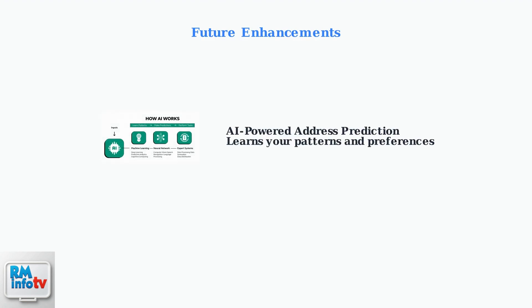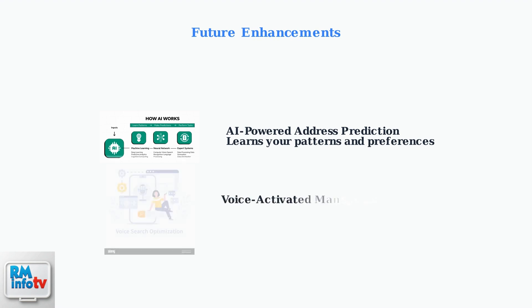Looking ahead, DoorDash is developing new features that will revolutionize address management using artificial intelligence and voice technology. AI will soon predict optimal delivery addresses based on your patterns, learning when you're at work versus home to suggest the right address automatically. Voice-activated address management will allow hands-free updates — you'll be able to change your delivery address or add new locations using just your voice.